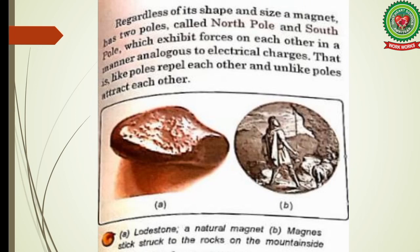Regardless of its shape and size, a magnet has two poles — north pole and south pole — which exhibit forces on each other analogous to electrical charges. Like electrical charges, positive repels positive but attracts negative. Similarly, like magnetic poles repel each other and unlike poles attract each other.